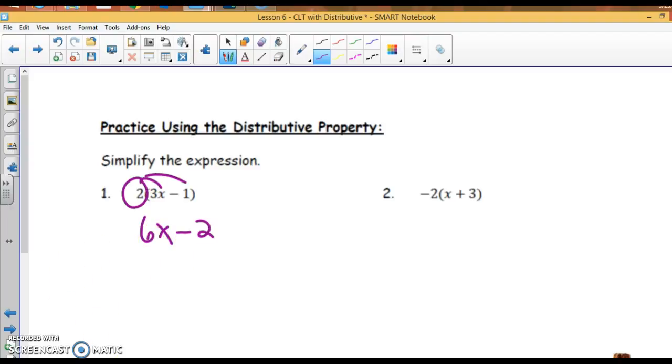This one, I'm distributing the negative 2 to the quantity x plus 3. Negative 2 times x is negative 2x. Negative 2 times positive 3 is negative 6, so negative 2x minus 6.